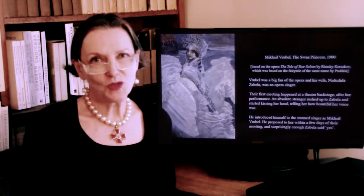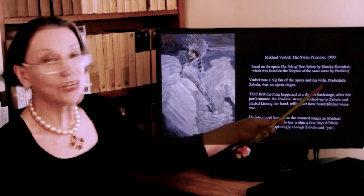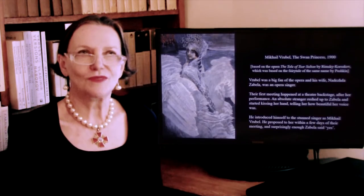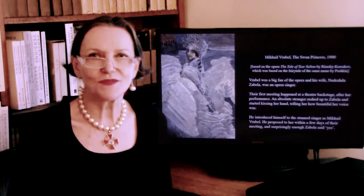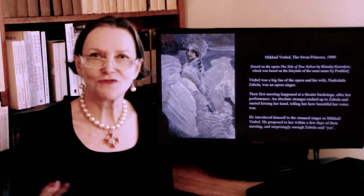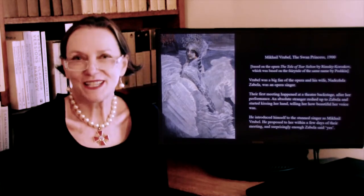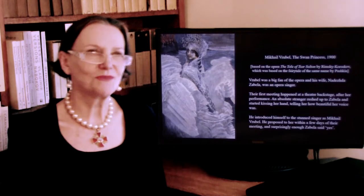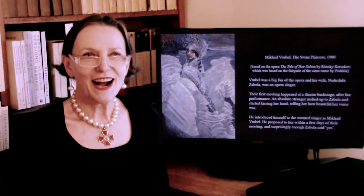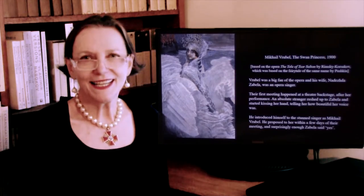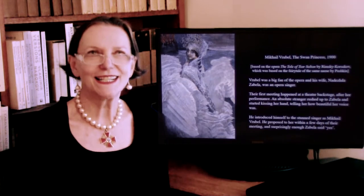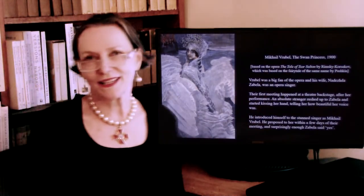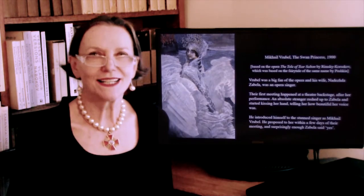He married a very famous singer whose name was Nadezhda Zabela. The story goes that Vrubel, who loved opera, came to see one of the operas in which Zabela was singing, and was so struck by her beauty and voice that he ran to her dressing room after the performance and just started kissing her hands. She had no idea who he was, but after he introduced himself, she had heard the name. He proposed within a week or so after their first meeting, and surprisingly she said yes. Then he would paint her in very many ways — as an actress, as the personification of so many figures in opera. This is where Zabela sang the Swan Princess.